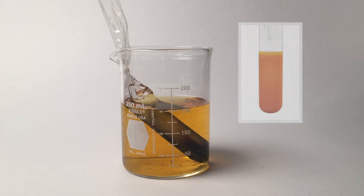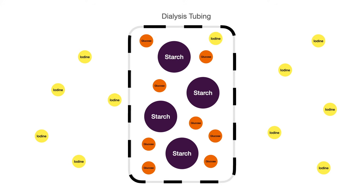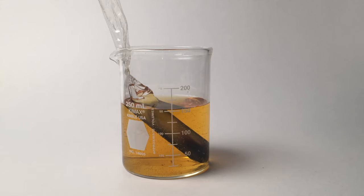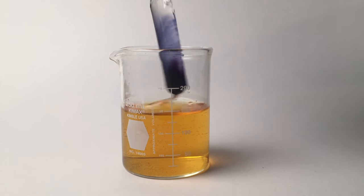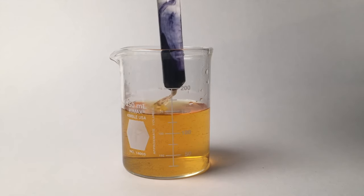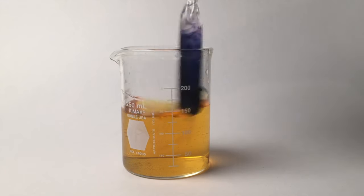So in conclusion, we've got iodine going into the bag, glucose going out of the bag, and starch staying in the bag. And the reason why certain things can leave and other things cannot is purely based on the size of the molecules and the size of the openings in that dialysis tubing or that bag.